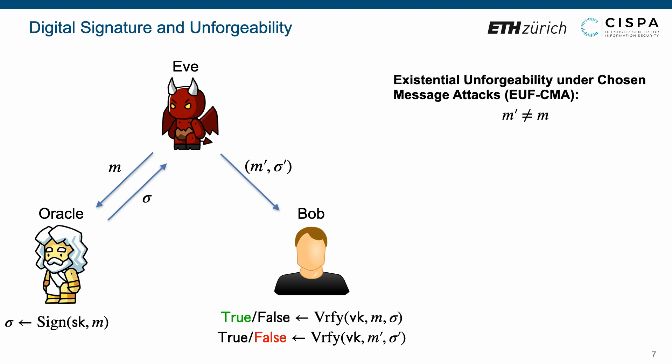The existential unforgeability under chosen message attacks, we say unforgeability for short, requires the verification algorithm executed by Bob to output false if the forged message M' is unequal to any message M that has been queried to the signing oracle.